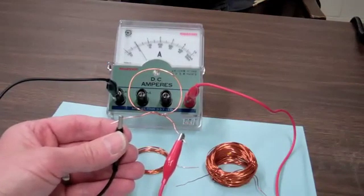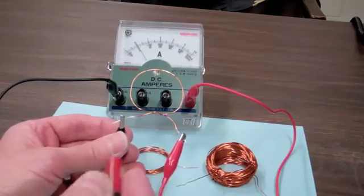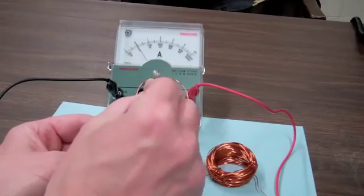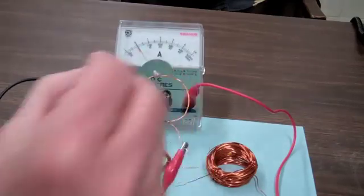I now have the single loop coil connected to the ammeter, and I am going to move the bar magnet into and out of the coil. If you watch very closely, you can see a slight deflection of the ammeter needle.